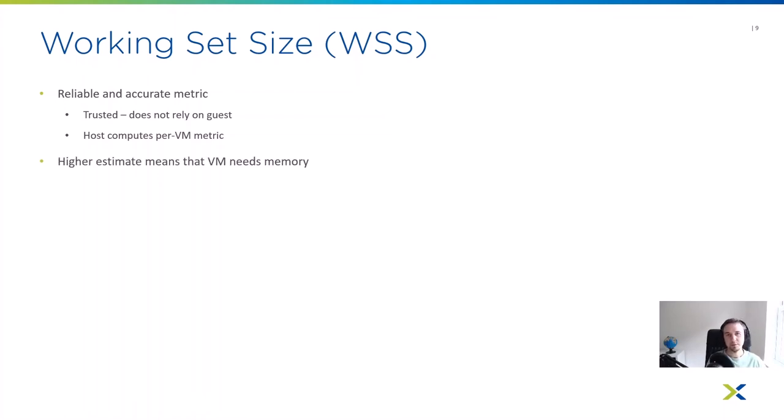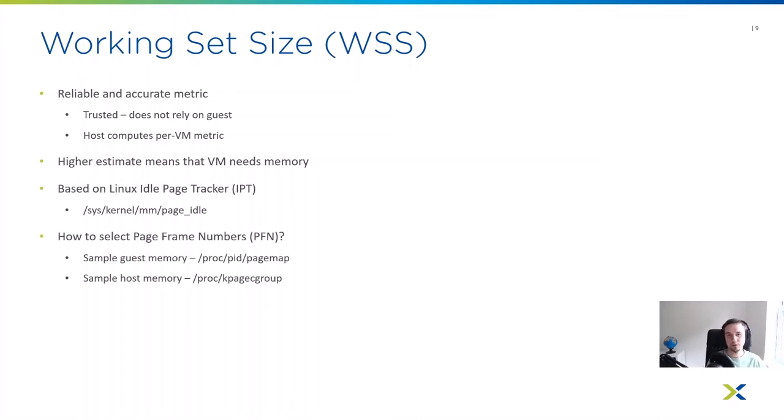Practically, high working set estimate means VM needs memory. There are corner cases, but they are rather one-off situations we handle. The metric is based on the idle page tracker available in the Linux kernel. As many of you know, it's a bitmap interface indexed by the page frame number within the host address space. Of course, we could track all pages available within the host and get the working size estimate for VMs, but this is not practically achievable at scale because there are hundreds of gigabytes or terabytes of memory. So we need to do some sampling.